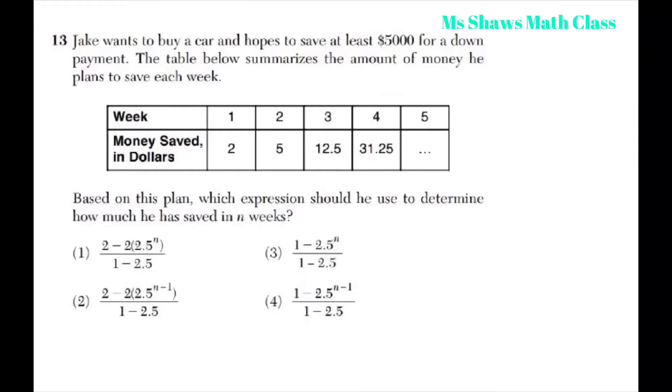Hi, everyone. Jake wants to buy a car and he wants to save at least $5,000. So, he wants to save greater than $5,000 for a down payment. The table below summarizes the amount of money he plans to save.